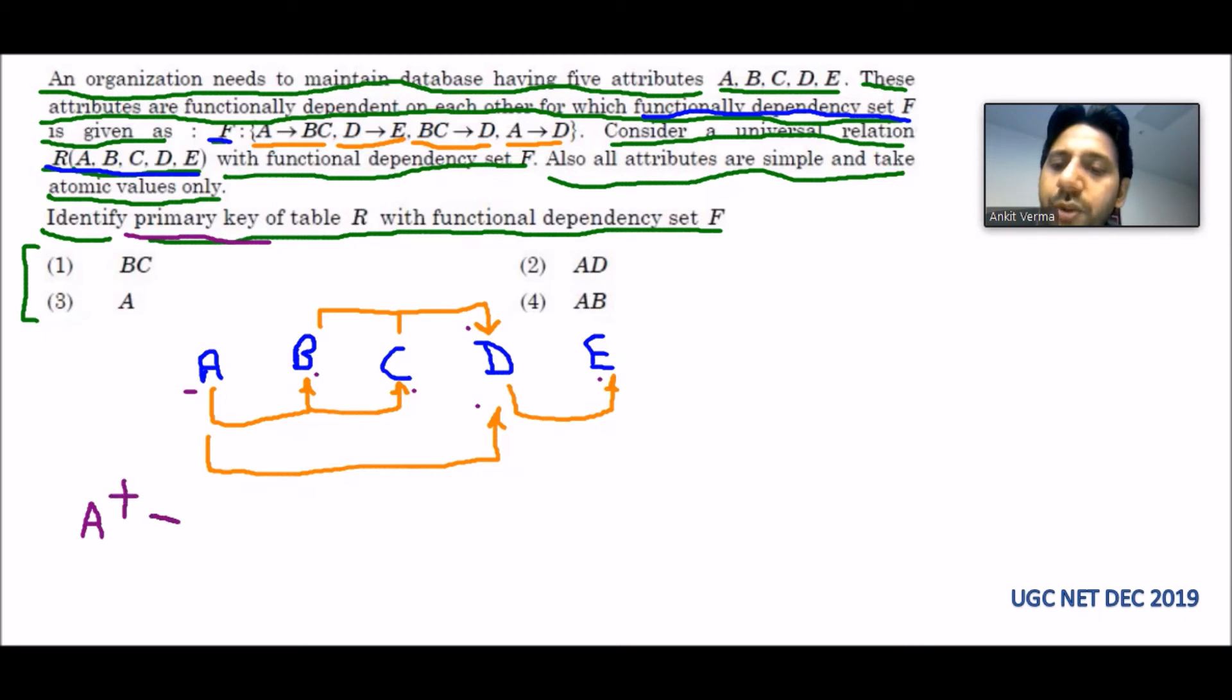Closure means what we can find with this attribute. With A we can find A itself, then with A we can find B and C, so I am writing B and C also there. With A we can also find D, so I am writing D here.